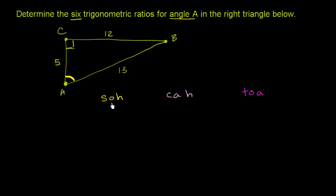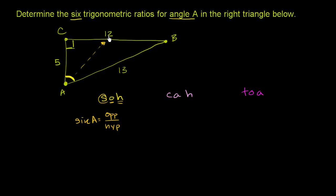We can get the other three by looking at the first three. SOH tells us that sine of an angle — in this case sine of A — is equal to the opposite over the hypotenuse. In this context, what is the opposite side to angle A? We go across the triangle; it opens up onto side BC, which has length 12. So that is the opposite side, and sine of A equals 12 over something.